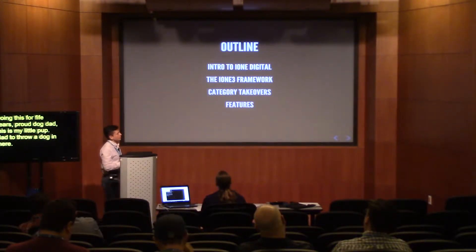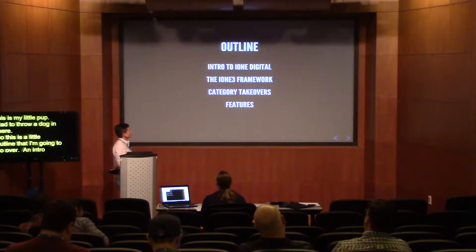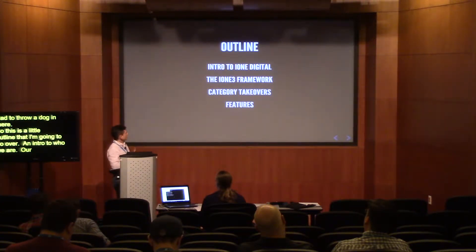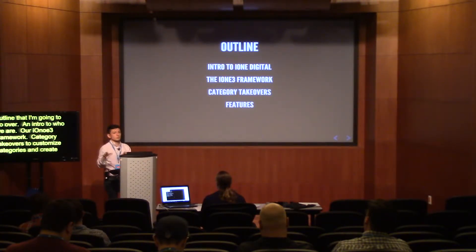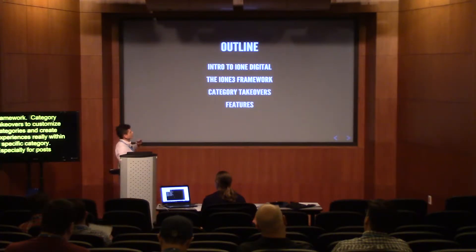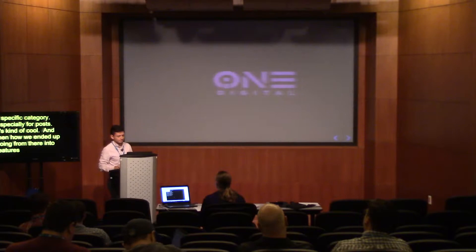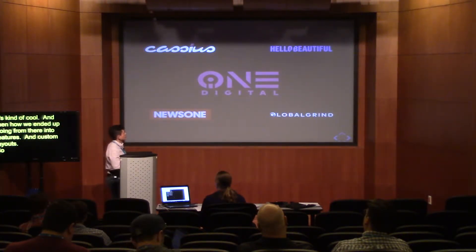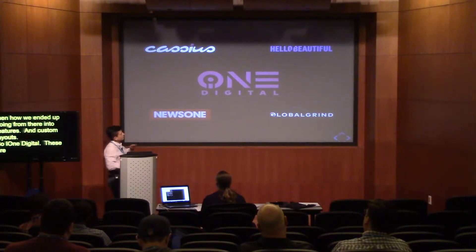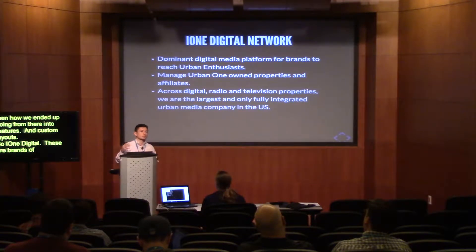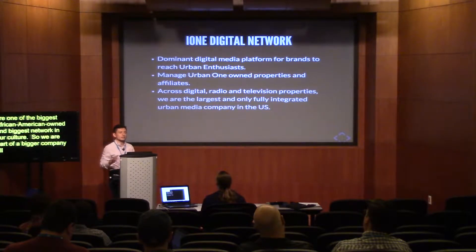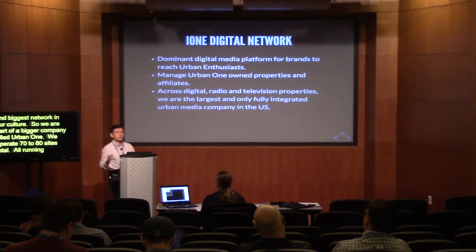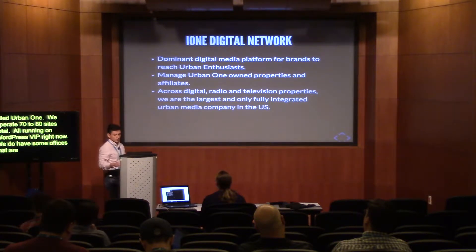The outline I'm going to go over includes an intro to who we are, our i13 framework which is what we run our sites on, our category takeovers that we use to customize categories and create really cool experiences, and then how we ended up going from there into features and custom layouts. These are our major brands: Caches, Hello Beautiful, News One, Global Grind. We're really one of the biggest African American owned networks within urban culture, part of a bigger company called Urban One. We operate about 70 to 80 sites total, all running on WordPress VIP right now.